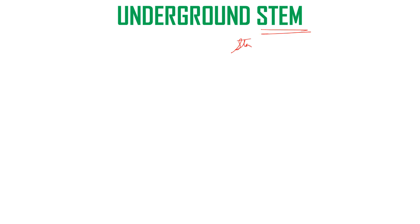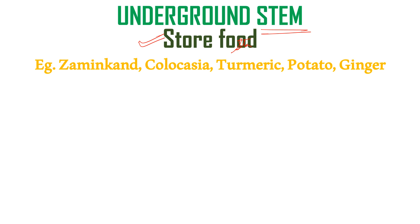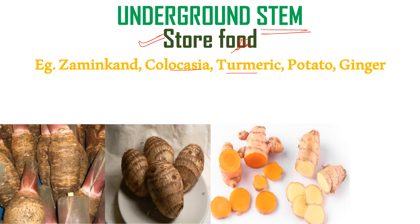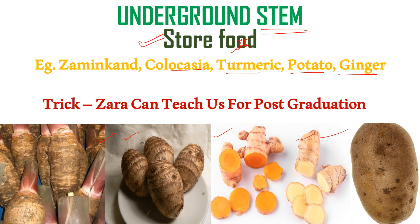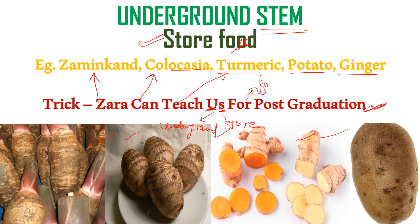Next is about underground stem modification, also for storage of food. The examples are Zameen khand, kolokasya, turmeric, potato and ginger. The trick is: 'Zara can teach us for post graduation.' From 'Zara' it's Zameen khand, from 'can' it's kolokasya, from 'teach' it's turmeric, from 'us' it's underground stem storing food, from 'post' it's potato, and from 'graduation' it's ginger.